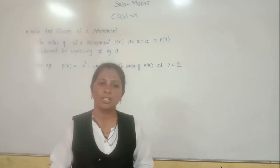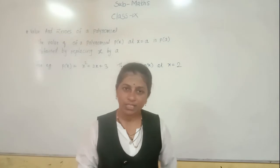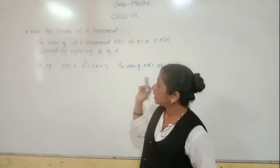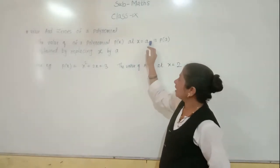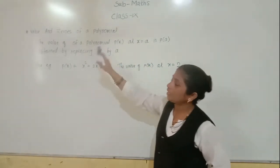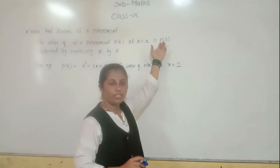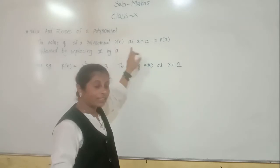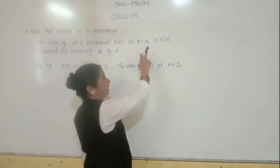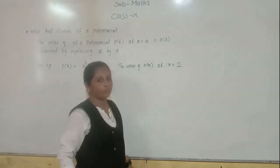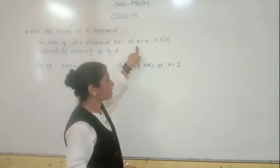Generally, we represent any polynomial with P of X or F of X. Polynomials can have two terms, three terms, or more than three terms. Any polynomial can be represented in the form P of X. The value of a polynomial P of X at X equals to A means we can take any value of X. To find the value of polynomial P of X at X equals to A, we have to replace X by A in that polynomial.